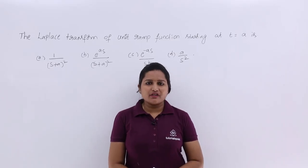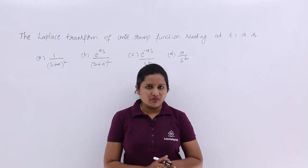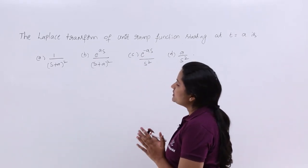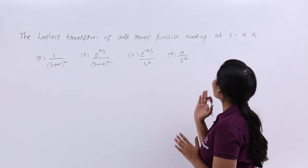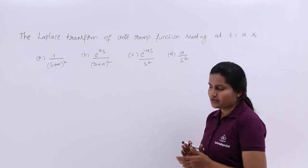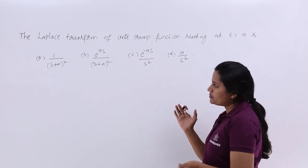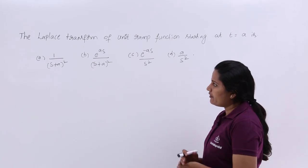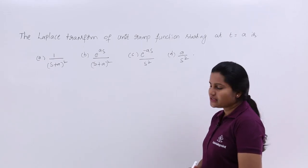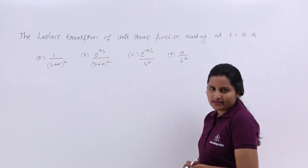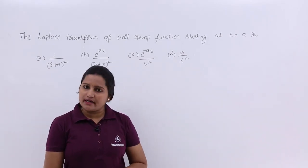In this video we are going to discuss one more problem related to Laplace transforms. The problem is: the Laplace transform of unit ramp function starting at T equal to A. The options are: Option A — 1 by (S plus A) whole square; Option B — e power AS by (S plus A) whole square; Option C — e power minus AS by S square; Option D — A by S square.